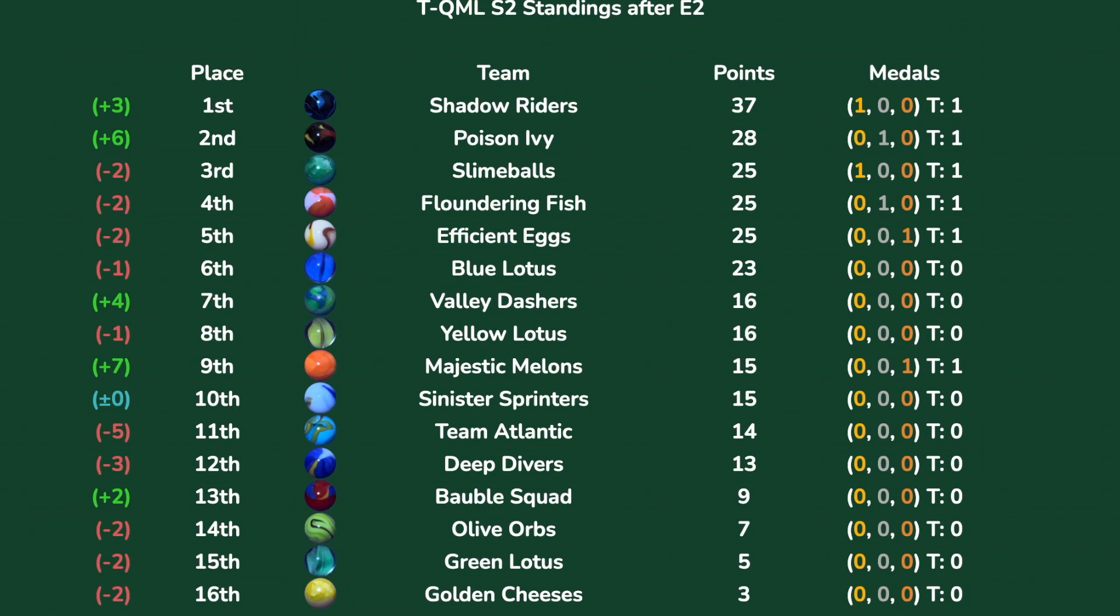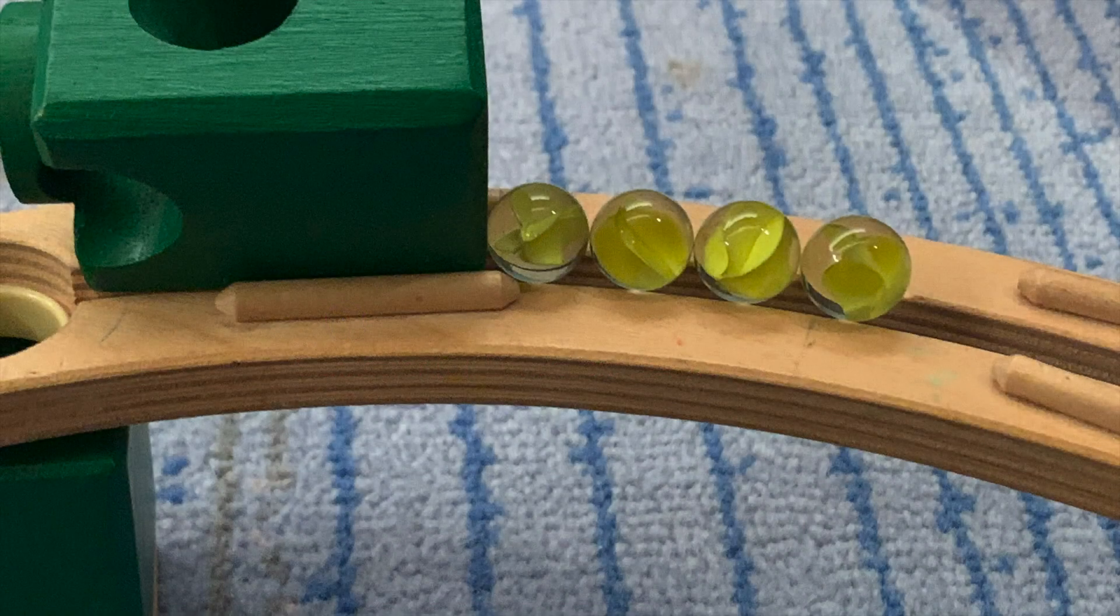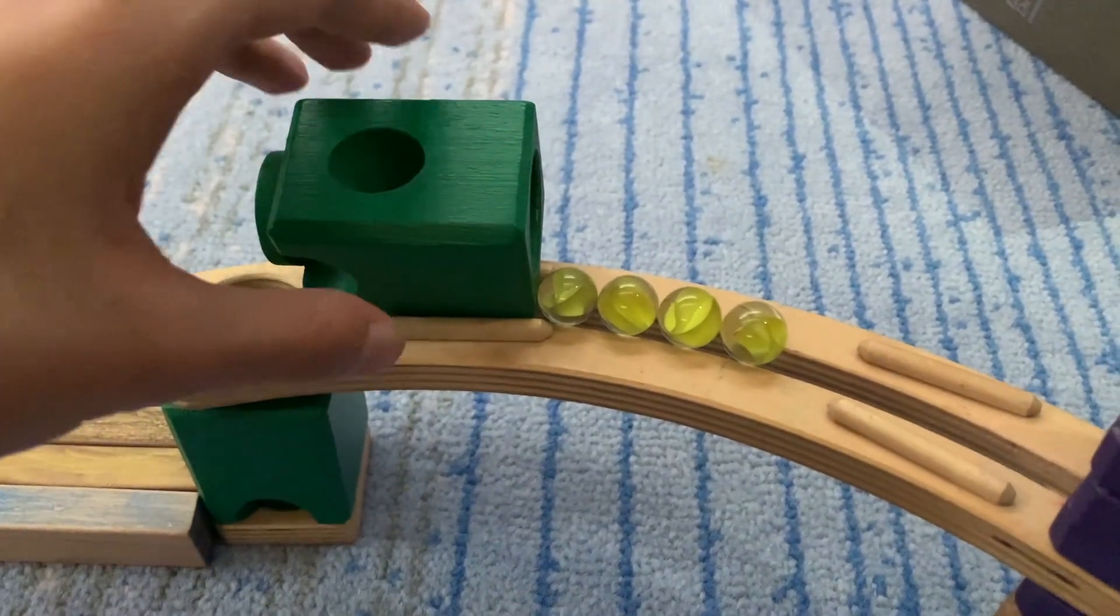The Shadow Riders have a nine-point lead over the Poison Ivy, our championship leaders. Then it's a further three points down to the Slime Balls in third, coming off a first and a 16th place finish. We're going to go straight into the heat of things with the Yellow Lotus starting us off, mid-pack in the standings and a pretty good team in balancing.